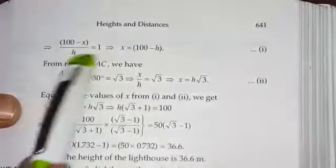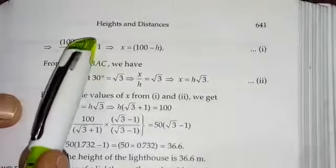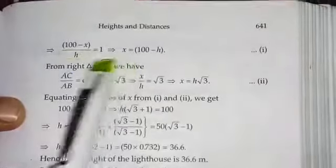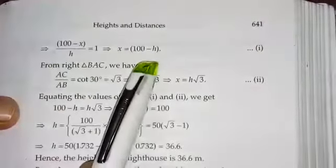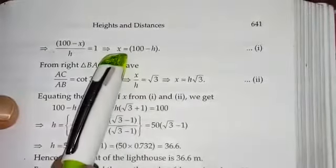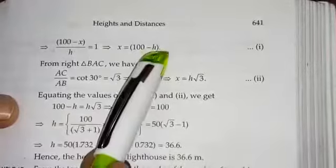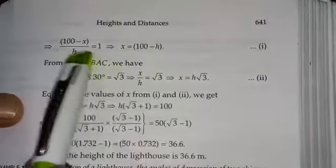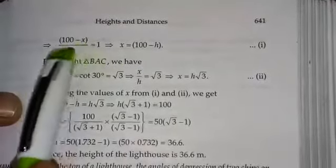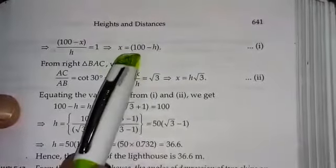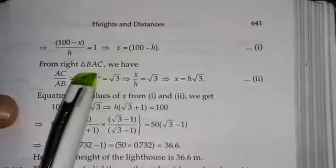Working this out, we get X equals 100 minus h. In this equation we have two unknowns, X and h, so neither of them can be found through this equation alone. We'll express X in terms of h and leave it as X equals 100 minus h, then take up the next triangle.